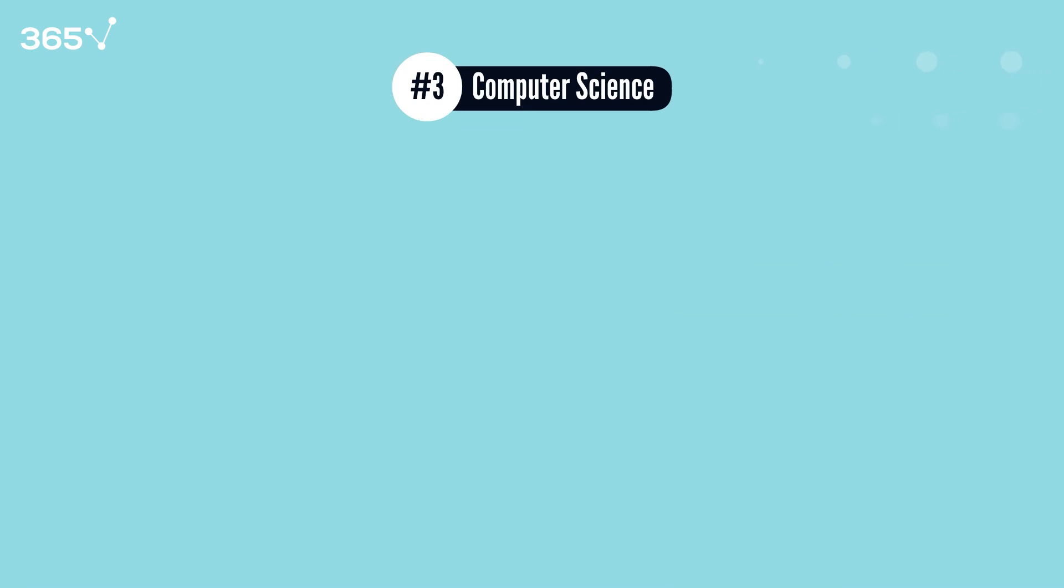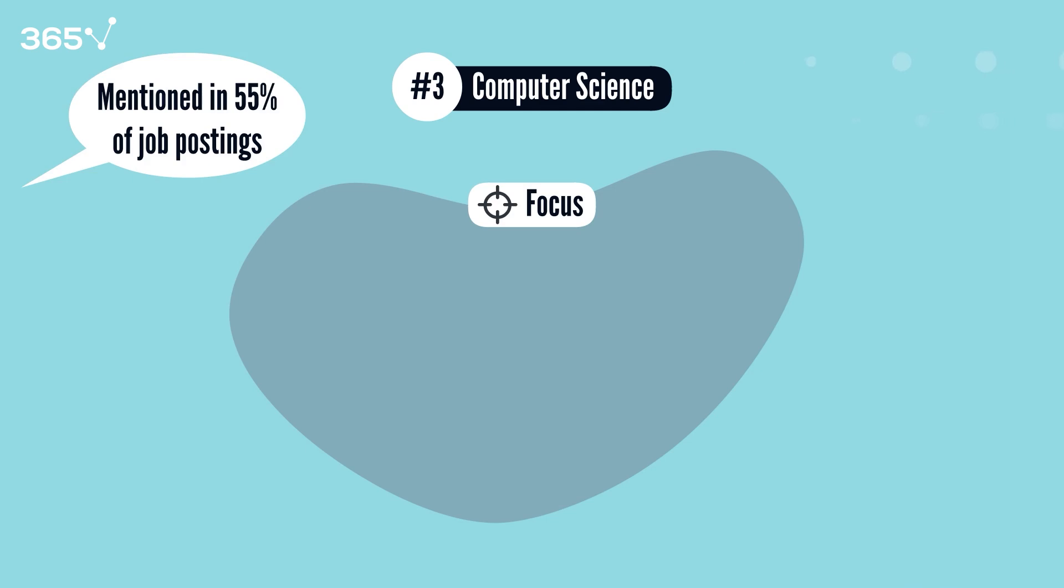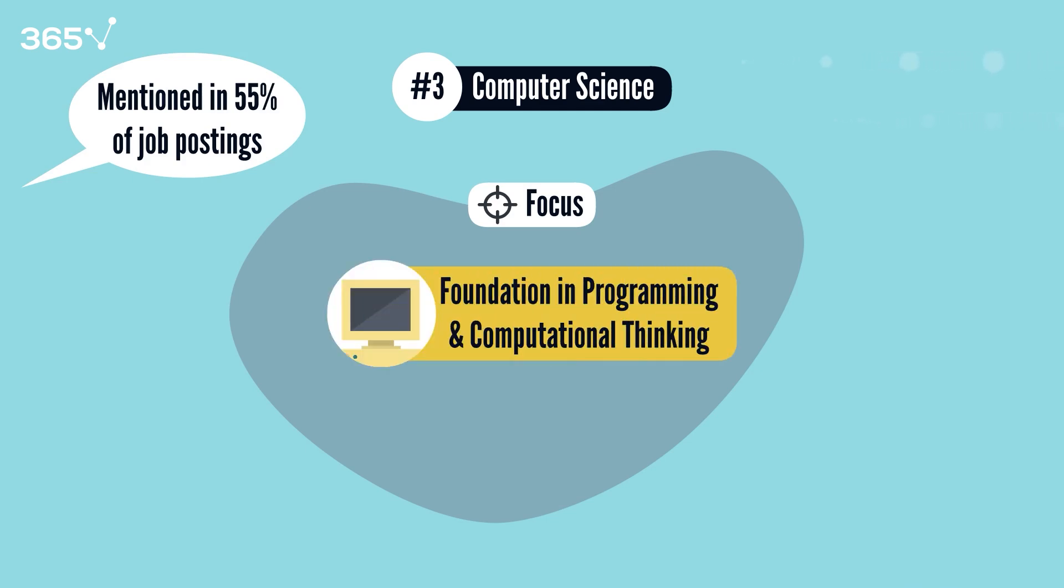Number three, computer science. Computer science degrees have long been a reliable pathway into data science. They're mentioned in 55% of job postings this year. They offer a foundation in programming and computational thinking and teach you how computers work from the ground up, giving you the technical backbone needed for data science work.